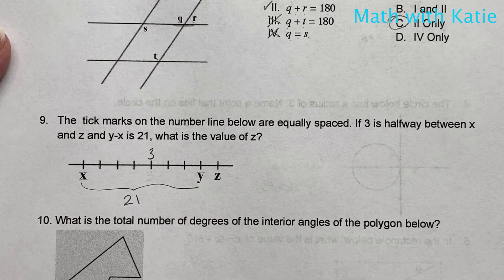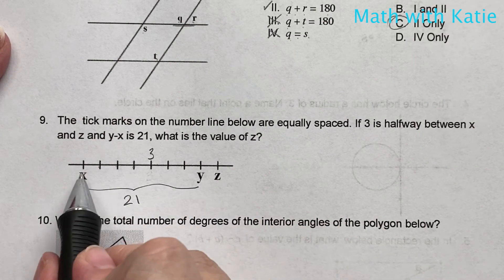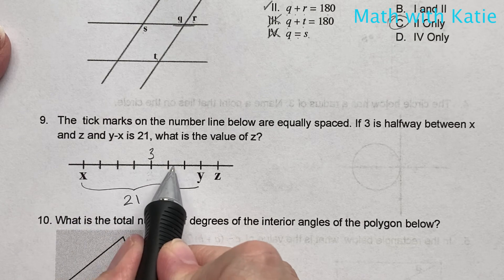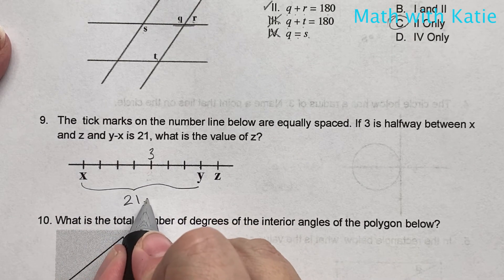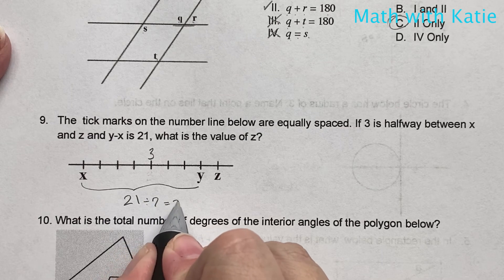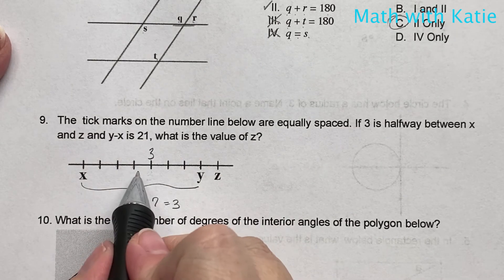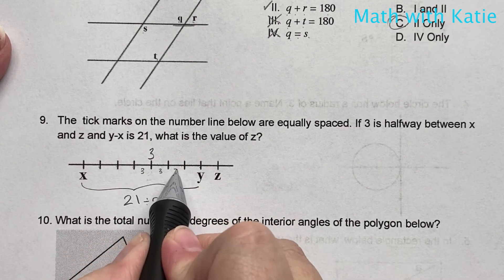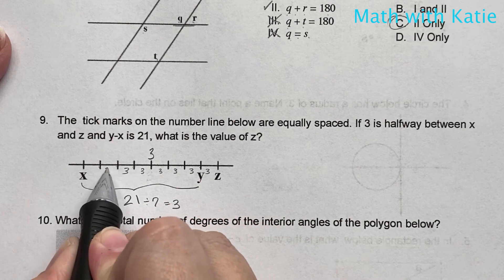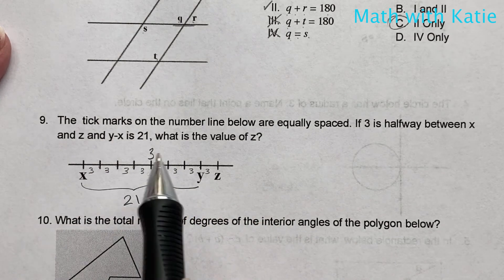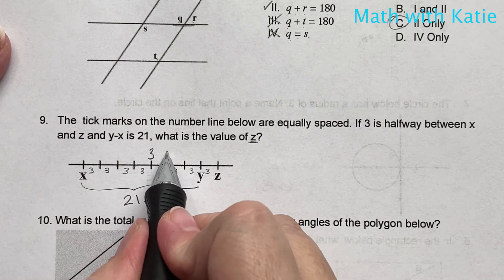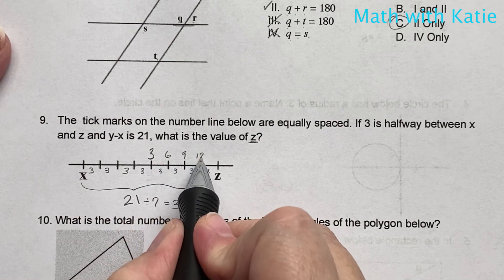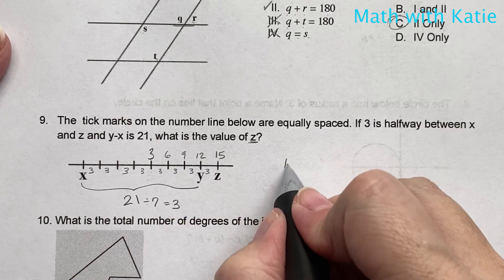What is the value of z? Well, we have one, two, three, four, five, six, seven. So 21 divided by 7 is equal to 3. So we know that in between their value is 3. So if this is 3, what is the value of z? So 3, 6, 9, 12, 15. So z is 15.